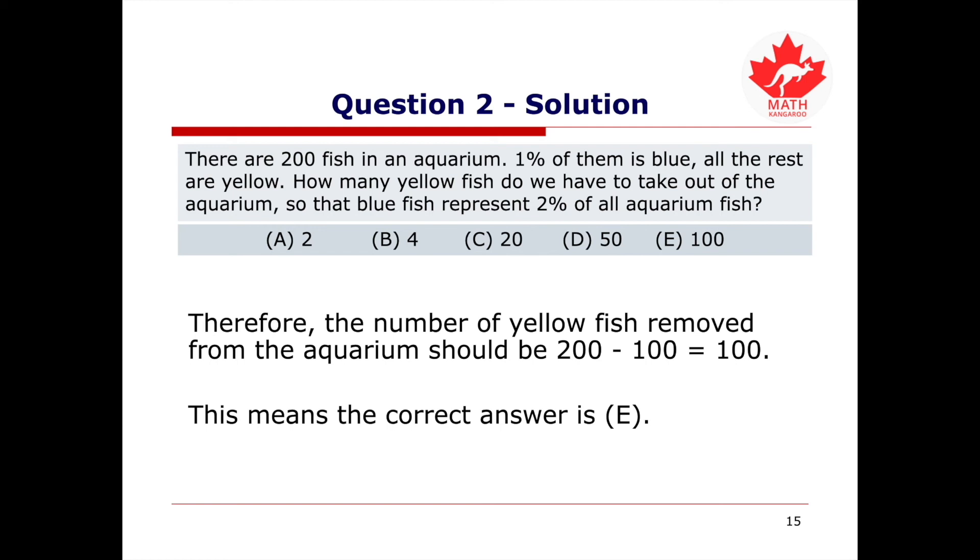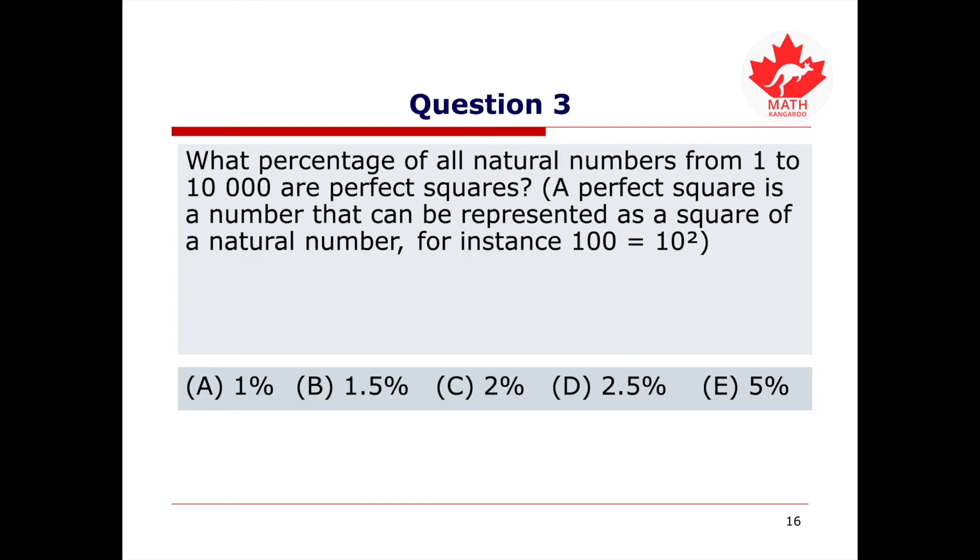Are we ready for the next question? Question 3 asks, what percentage of all natural numbers from 1 to 10,000 are perfect squares? A perfect square is a number that can be represented as a square of a natural number. For instance, 100 equals 10 squared and therefore 100 is a perfect square. Please be sure to pause this video and try this problem on your own before proceeding.